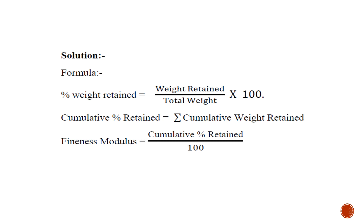In the solution, you have to first write the formulas required for calculation. The first formula is for percentage weight retained: weight retained upon total weight into 100. Weight retained is the weight retained on a particular sieve, and total weight is the addition of all weights, which is 1000 grams for this example.